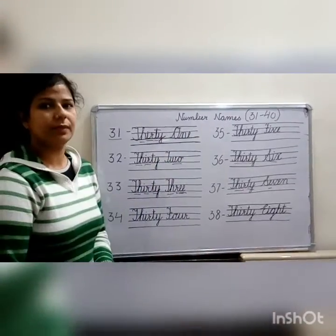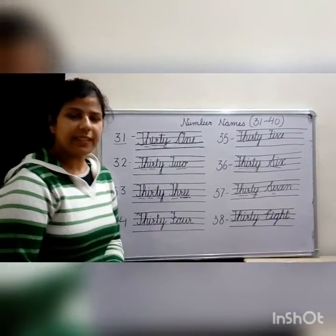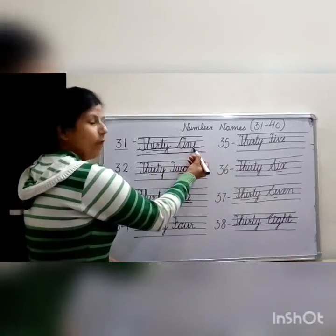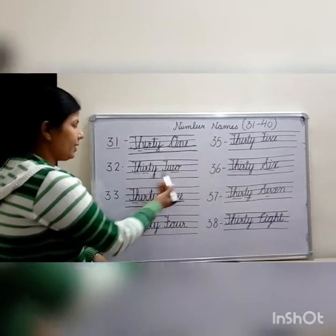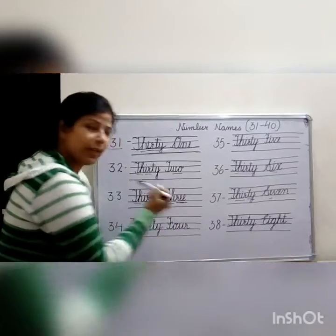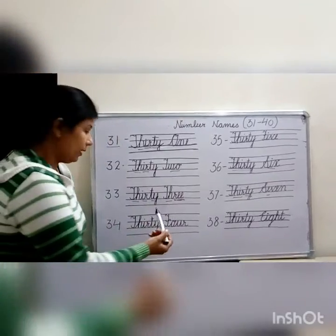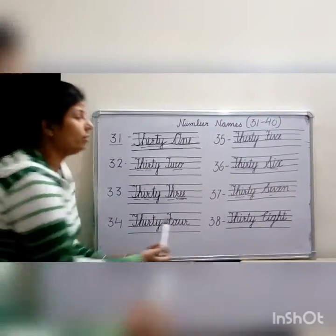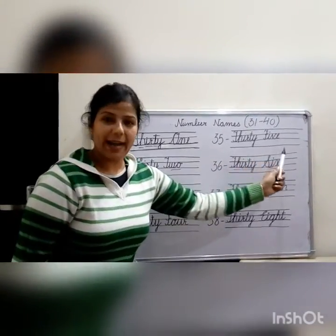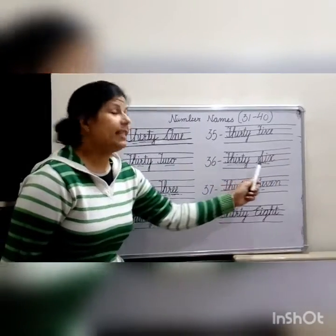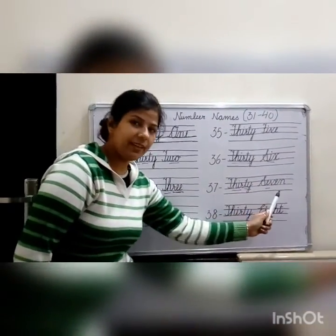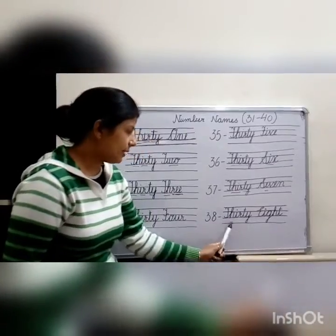Okay kids, let's read one more time. Thirty-one, thirty-two, thirty-three, thirty-four, thirty-five, thirty-six, thirty-seven, thirty-eight.